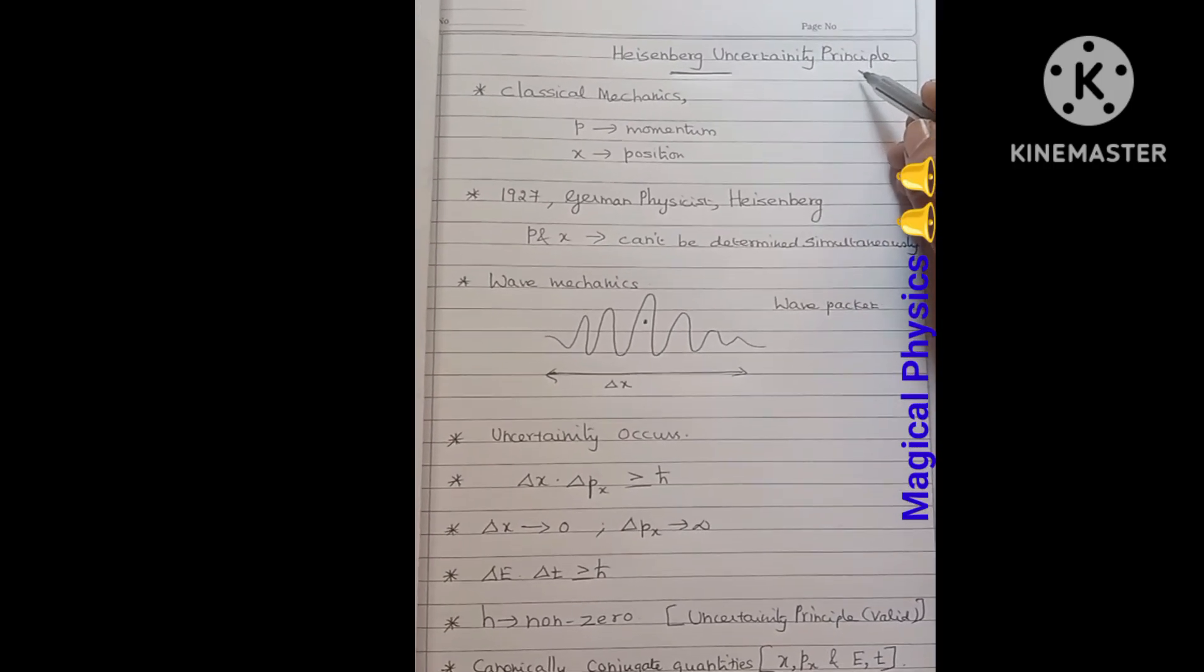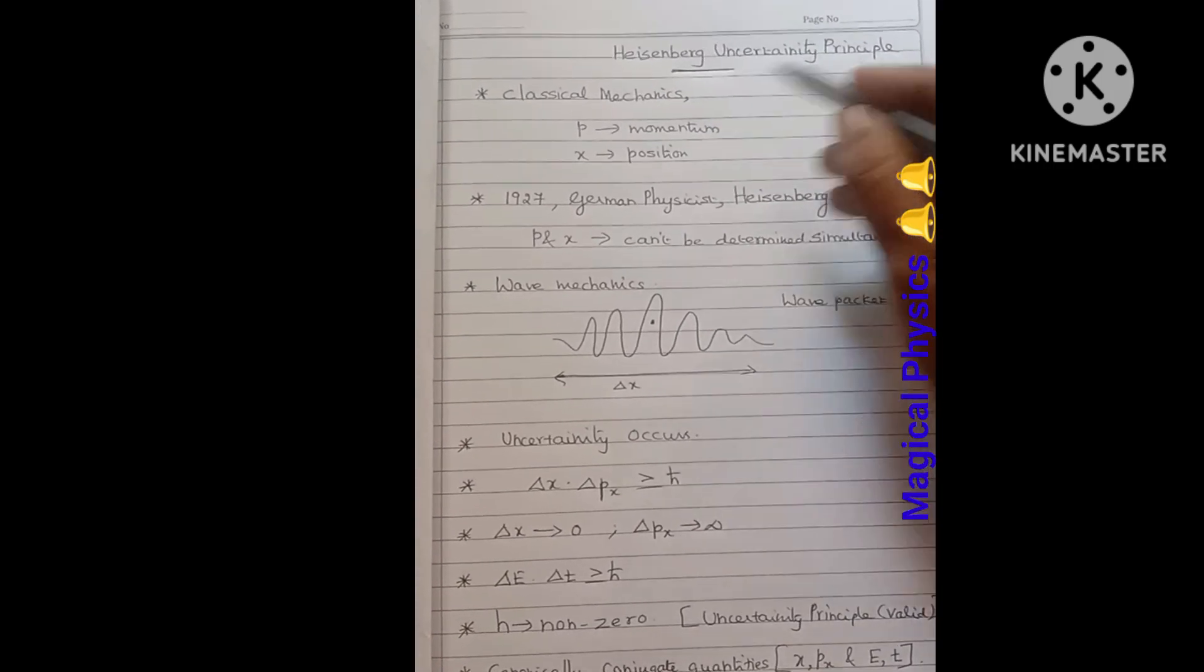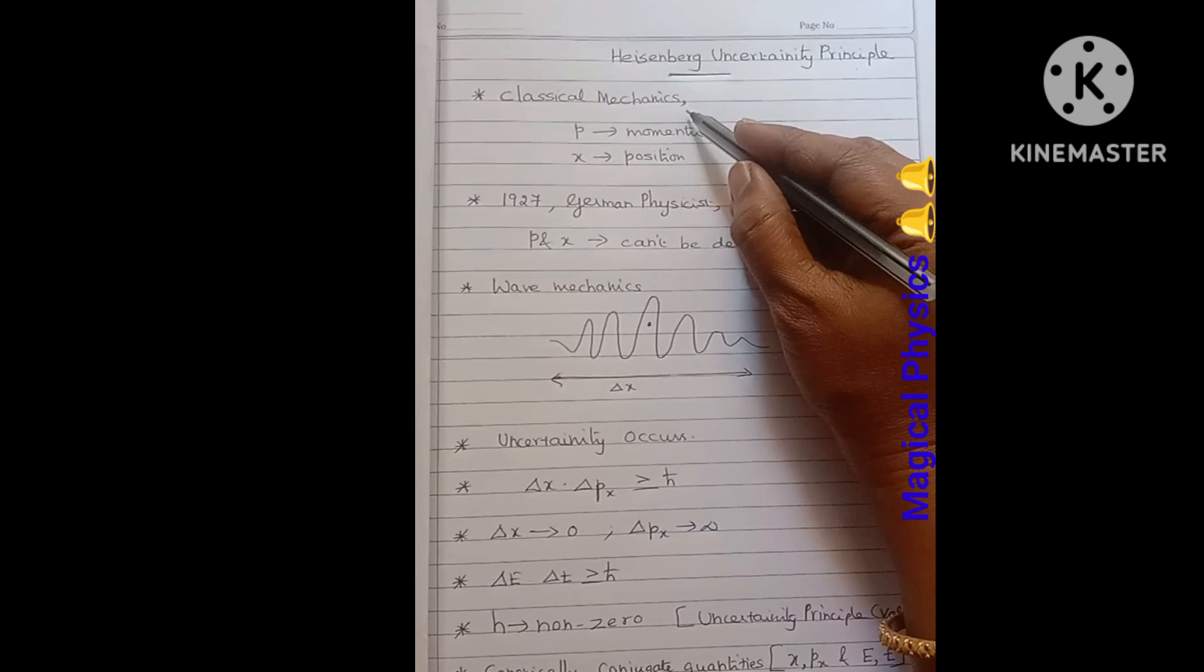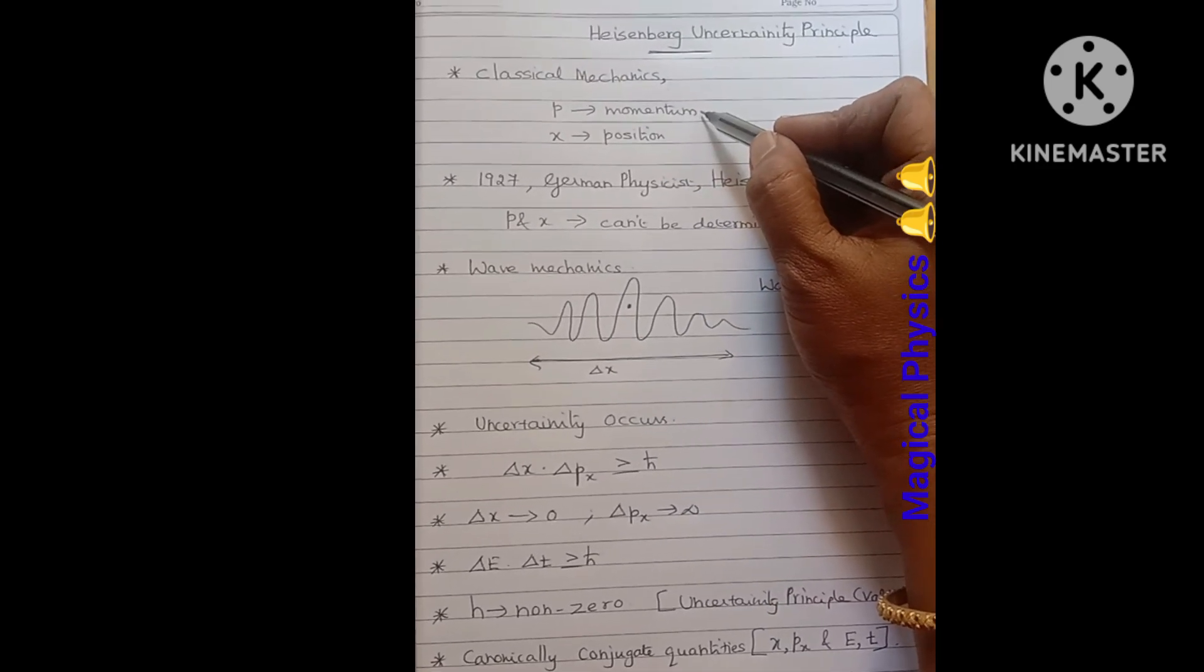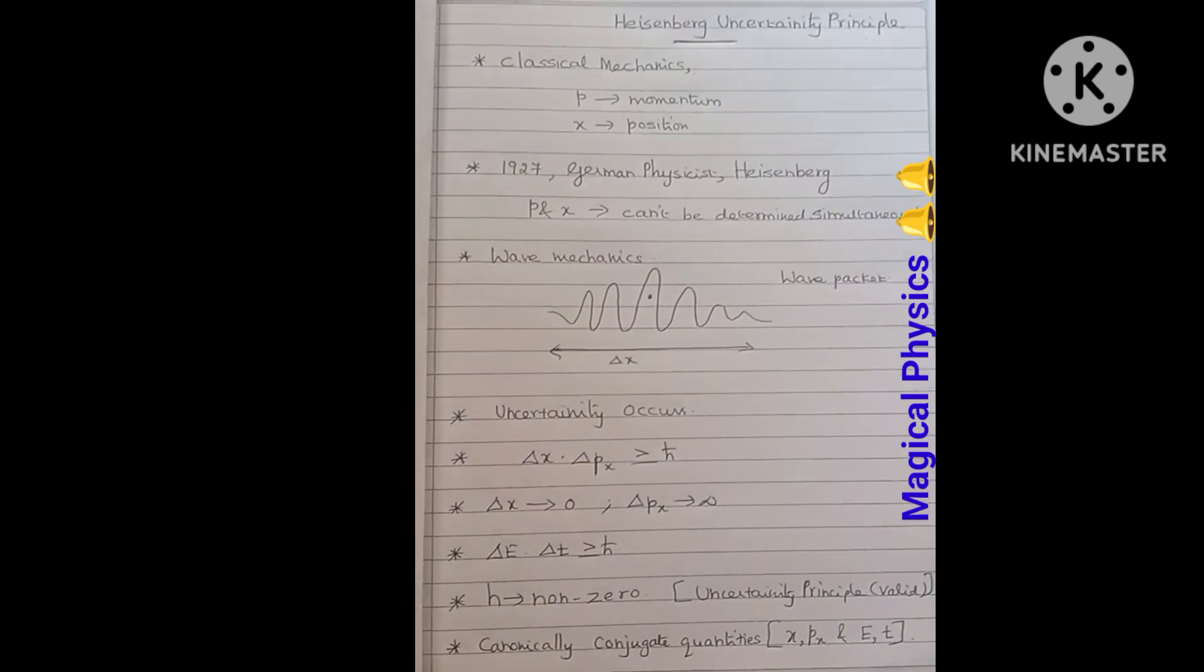Let us see about Heisenberg's uncertainty principle. By classical mechanics, if a particle is moving, we can predict the momentum and position.